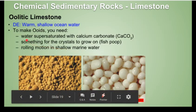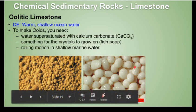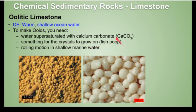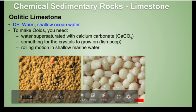Oolitic limestone is another type of limestone, and its depositional environment is warm, shallow ocean water. To make ooids, you need three things: water that is supersaturated, with a very high amount of calcium and carbonate ions; something for the crystals to nucleate on and grow on — a very common thing for that is fish poop; and finally, a gentle rolling motion in shallow marine water to roll these nucleating crystals around. When they get glued together, you get beautiful oolitic limestone.